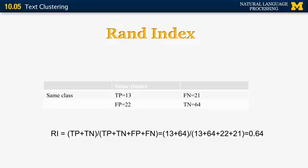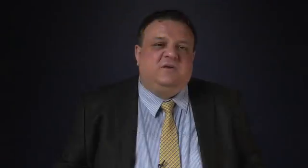If everything were correctly clustered exactly as in the gold standard, the RAND index would equal 1, because we would only have true positives and true negatives and none of the other two categories.